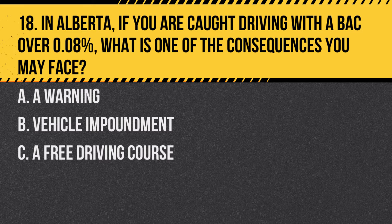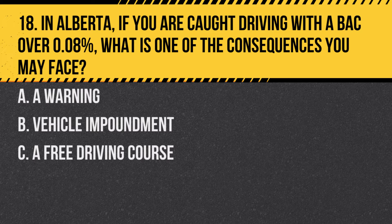Question 18. In Alberta, if you are caught driving with a BAC over 0.08%, what is one of the consequences you may face? a. A warning. b. Vehicle impoundment. c. A free driving course. Answer: b. Vehicle impoundment. Driving with a BAC over 0.08% can lead to severe consequences, including vehicle impoundment.